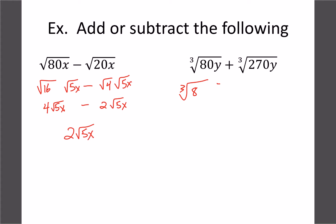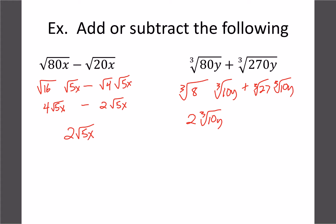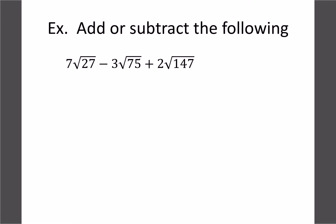For cube roots, the process is the same — break each into its biggest perfect cube factor. Cube root of 80y breaks into 8 and 10, and the y stays inside, giving 2 cube root 10y. The second term, cube root of 270y, breaks into 27 and 10, giving 3 cube root 10y. Adding those together gives 5 cube root 10y.